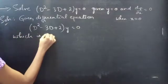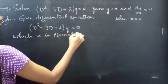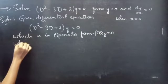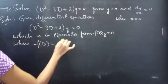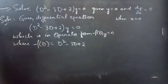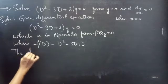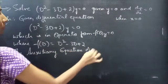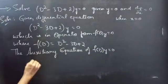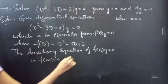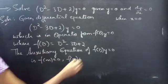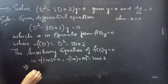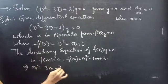The equation is in operator form: f(D)y = 0, where f(D) = D² - 3D + 2. We are going to find the general solution using the auxiliary equation. The auxiliary equation of f(D)y = 0 is f(m) = 0, where we replace D by m, giving us m² - 3m + 2 = 0.